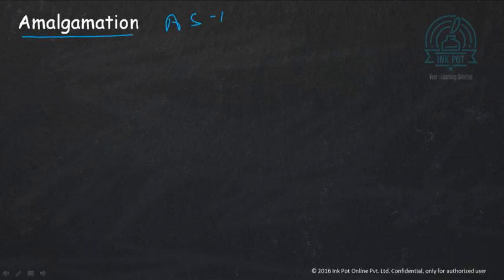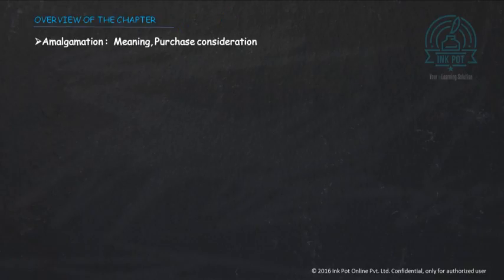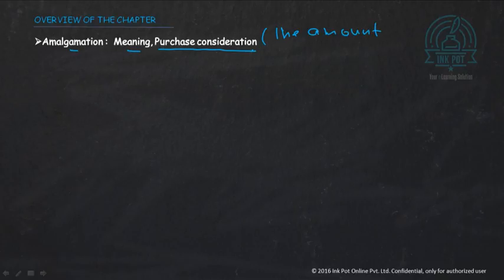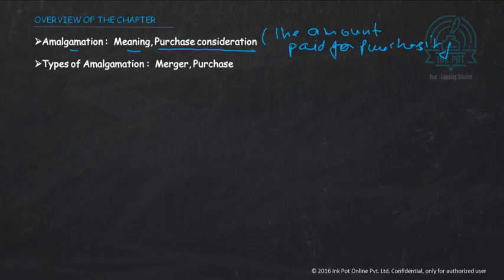Good morning. In the chapter of amalgamation, explained in accountancy as per Accounting Standard Number 14, we will study the meaning of amalgamation and purchase consideration. Purchase consideration is the amount paid for purchasing the business. We will also see the types of amalgamation — there are two types: merger and purchase. Merger means collaboration; purchase means acquisition.